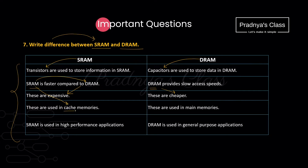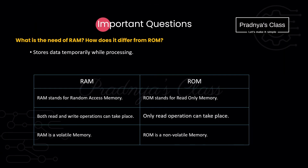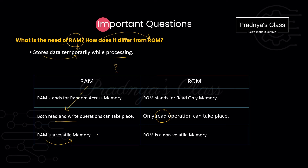Because SRAM is faster it is used in cache memory, whereas DRAM is slower so it is used in main memories. SRAM is used in high performance applications, whereas DRAM is used in general purpose applications. Regarding RAM vs ROM: RAM is used for storing data temporarily while processing. In RAM both read and write operations are allowed, but ROM only provides read operation. RAM is volatile memory — it stores data temporarily — while ROM stores data permanently; it is non-volatile memory.